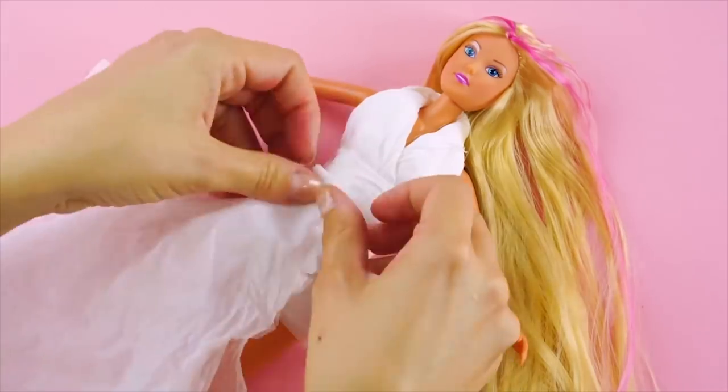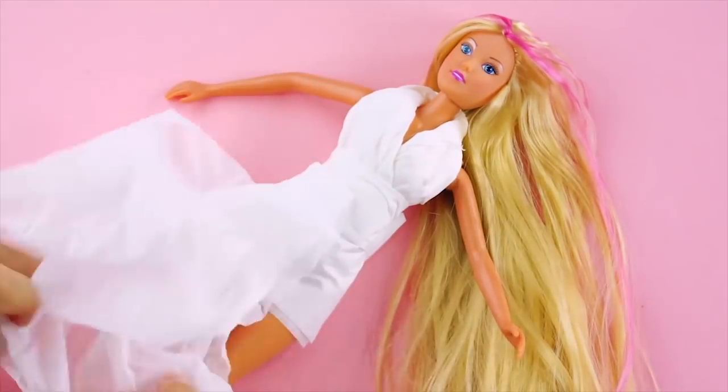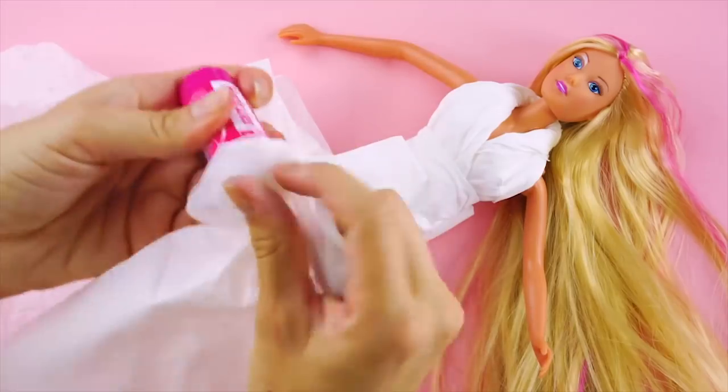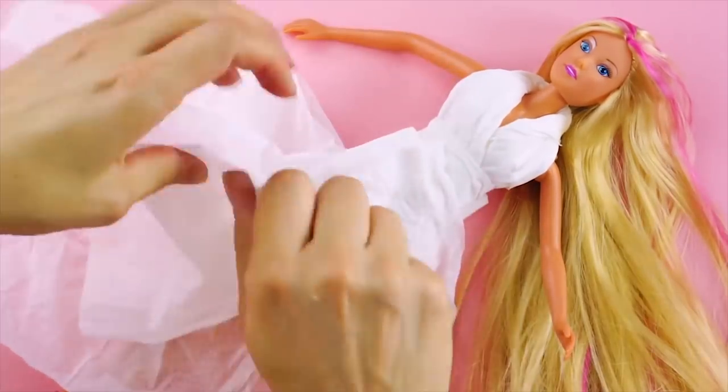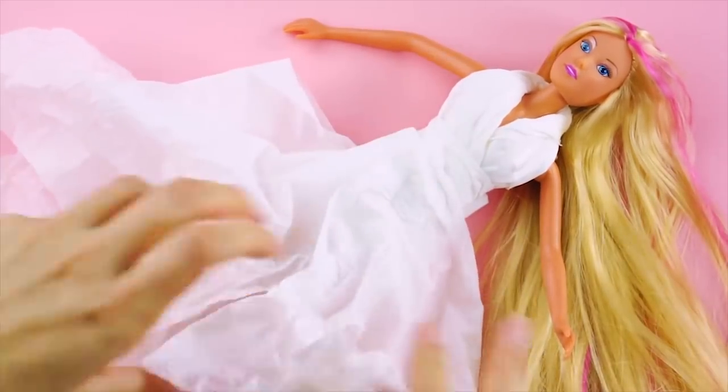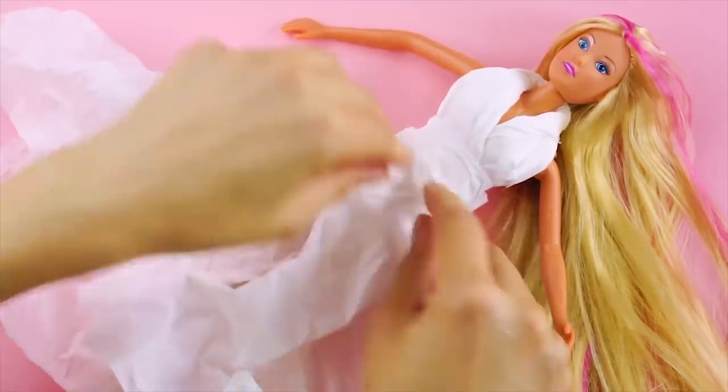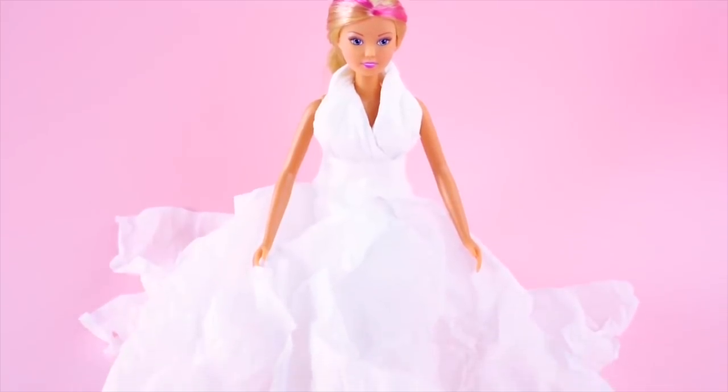Next, use your glue stick to attach slightly crumpled pieces of tissue along the waist to make a fuller skirt. Use your hands to scrunch the tissue to make a slightly fuller skirt. Now Barbie's ready to say I do.